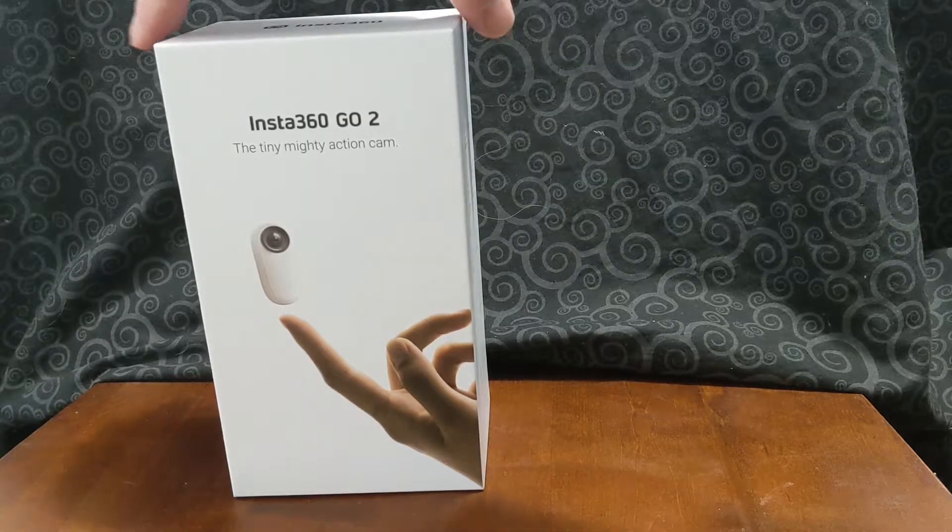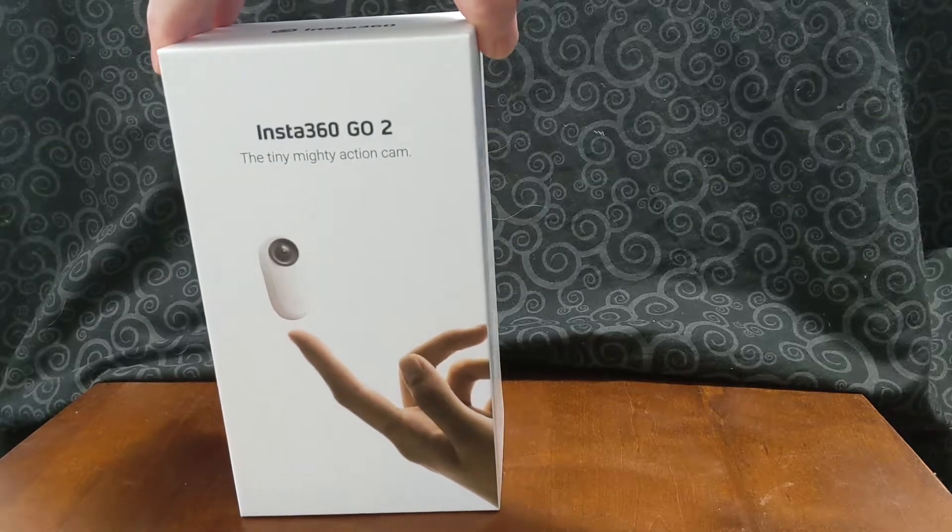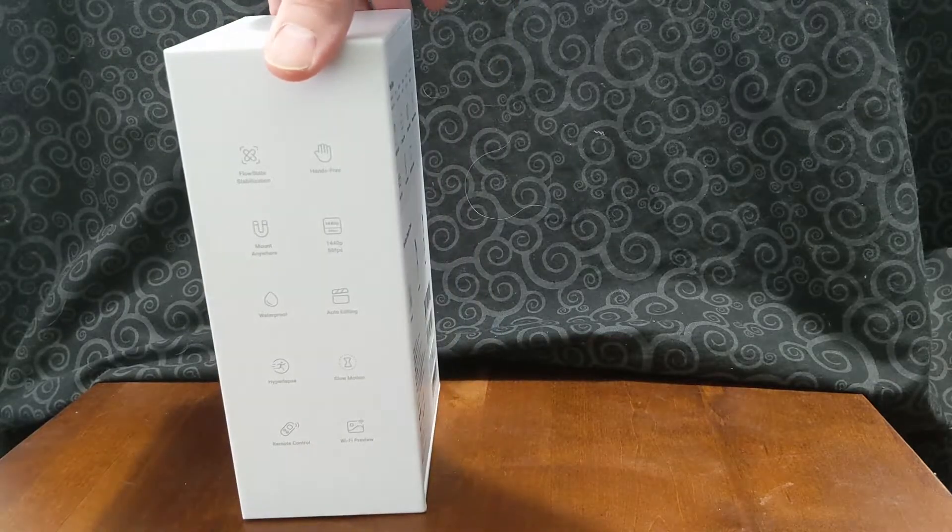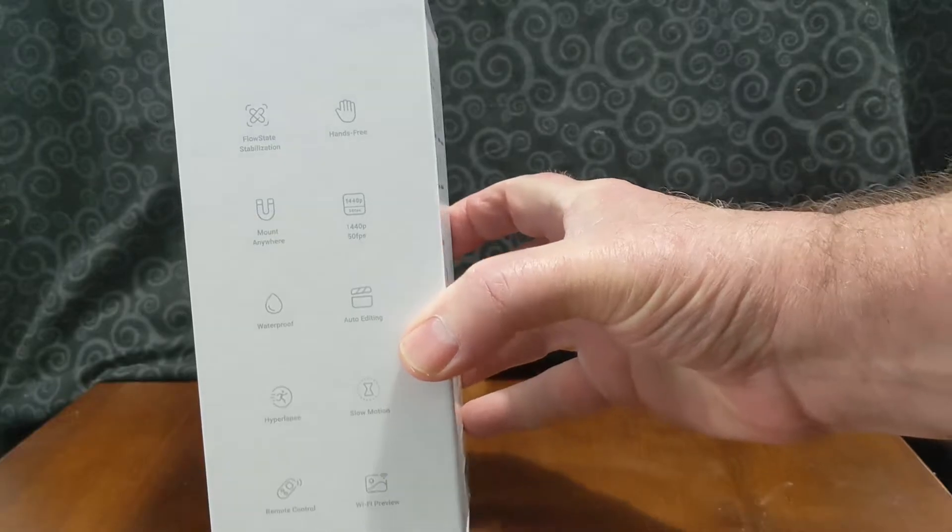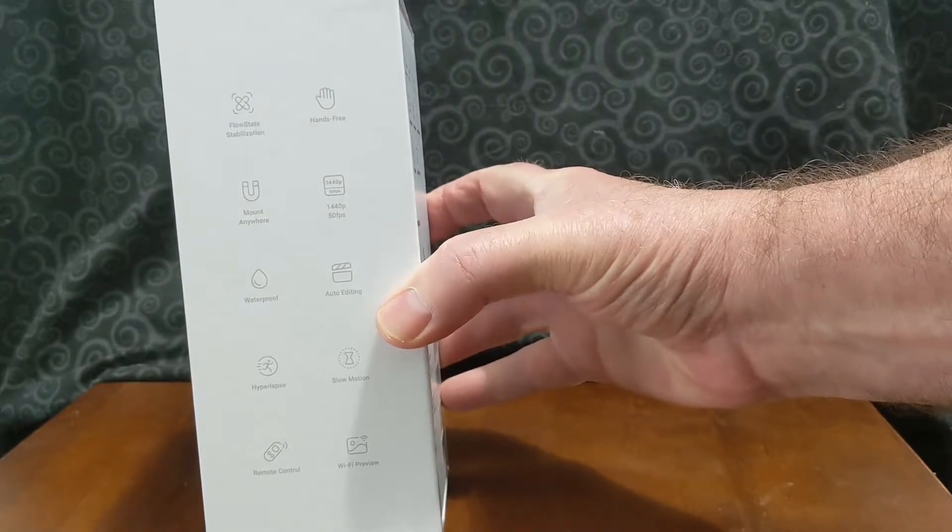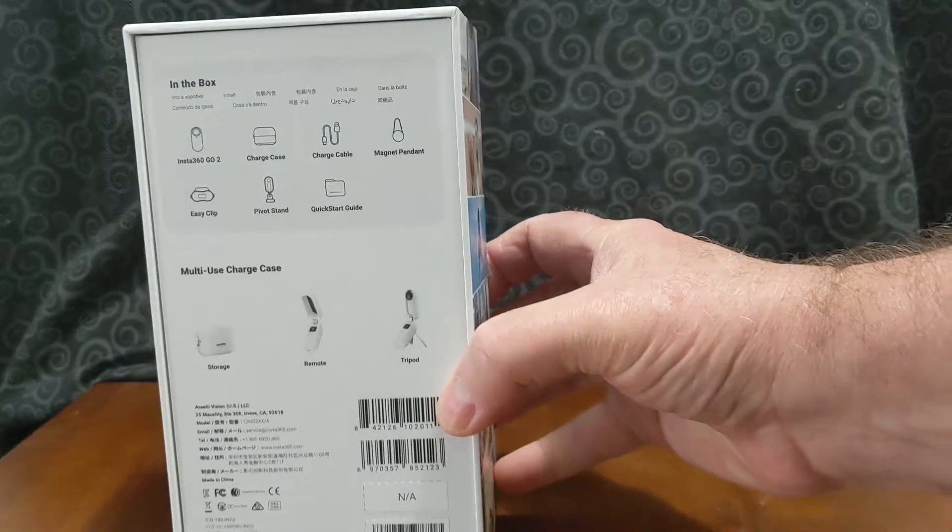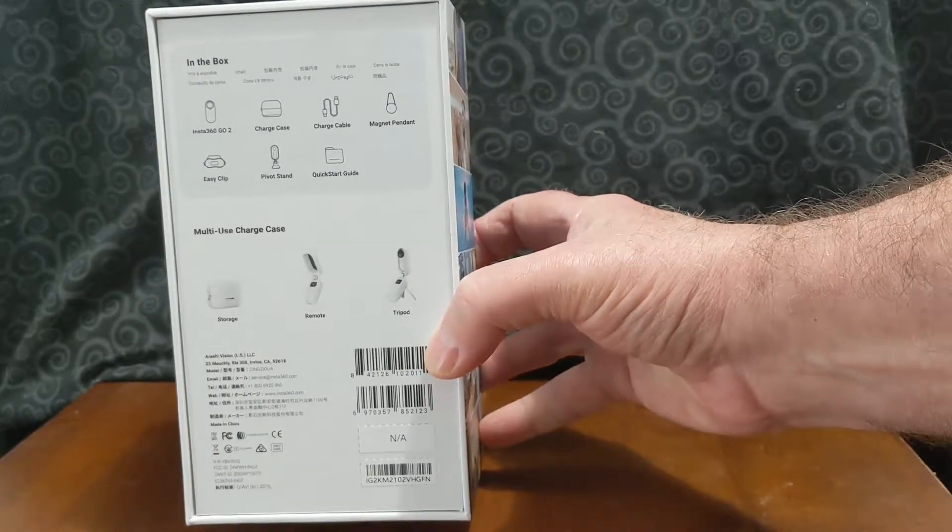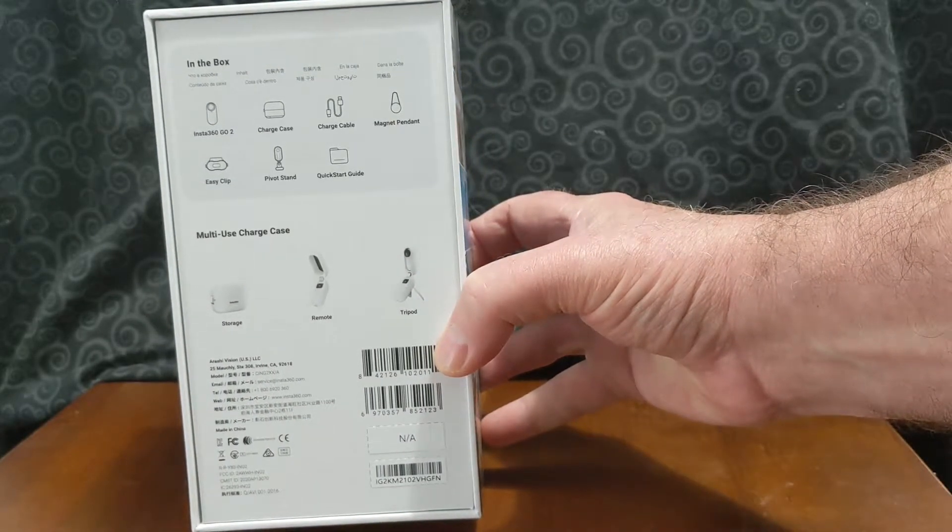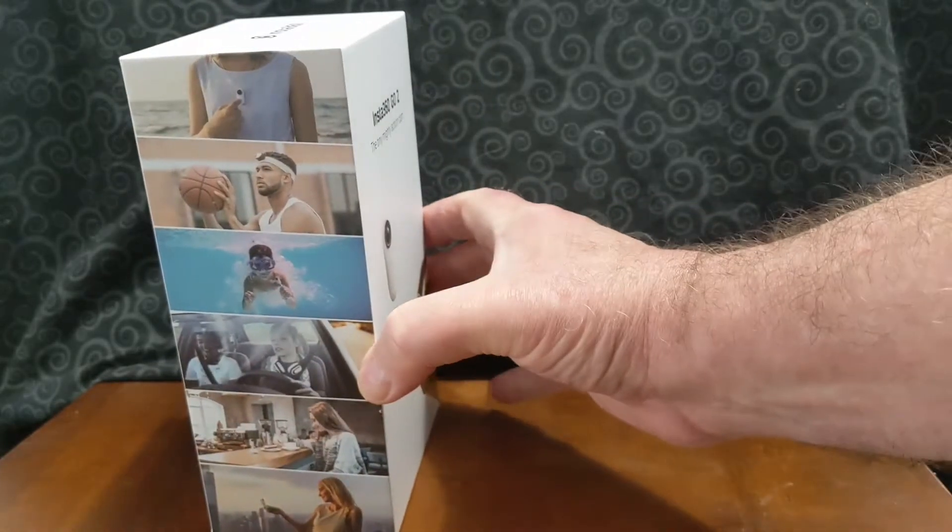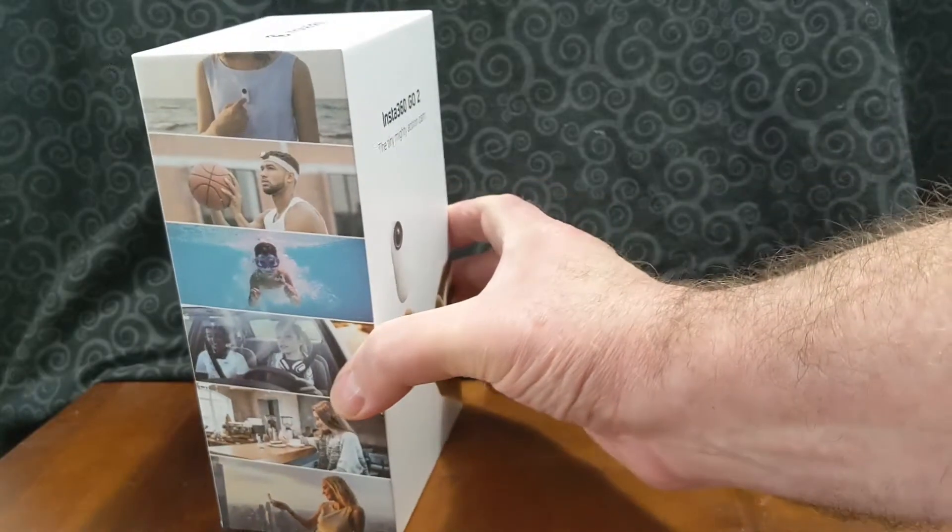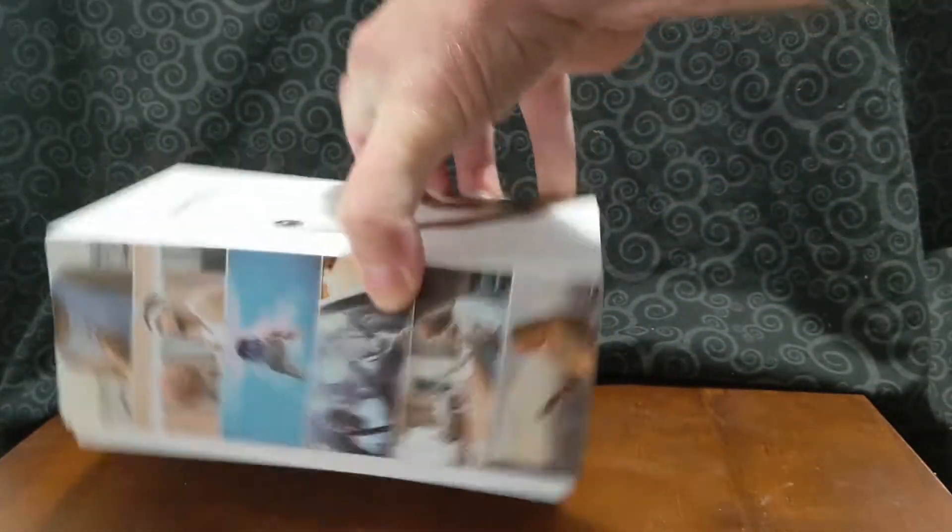So let's look at the outside of the box. Shows you a few things about the camera. Back of the box, side of the box. Okay, let's open the box.